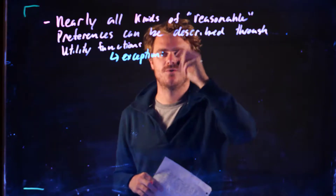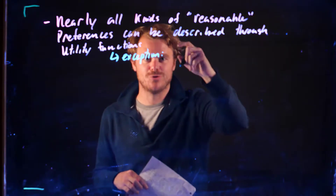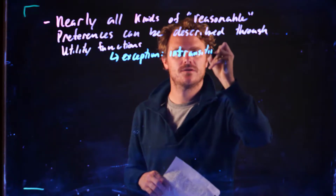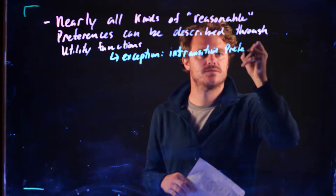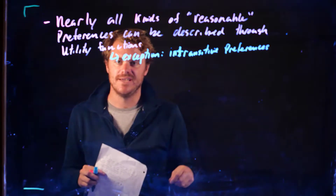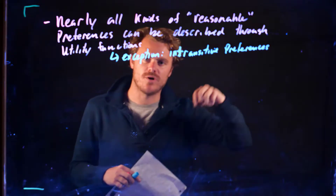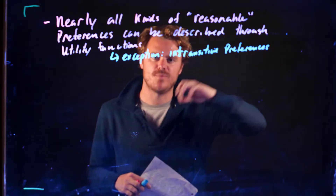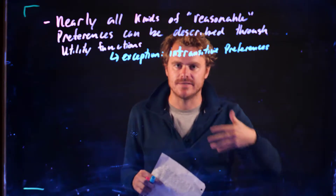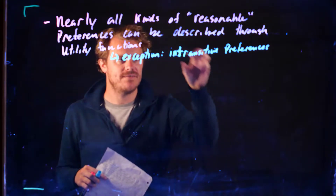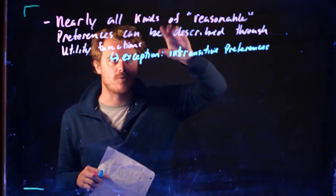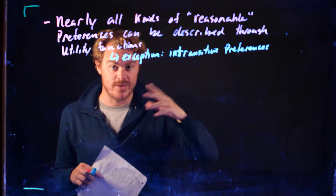When I say 'reasonable,' I'm ruling out intransitive preferences. Remember transitivity: if I like x more than y, and y more than z, that means I like x more than z. Think of it as a kind of consistency in what you want. If that's not true, it's going to be hard to represent those preferences with utility functions.